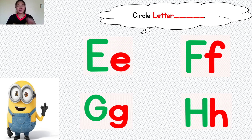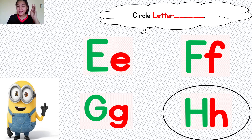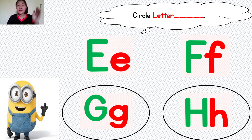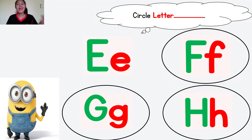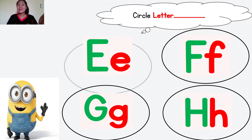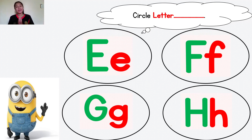Now, let's play a game. Circle letter H. Very good. Circle letter G. Circle letter F. And circle letter E. Very good.